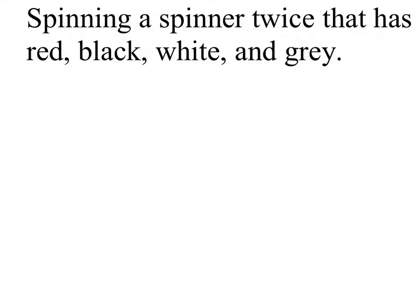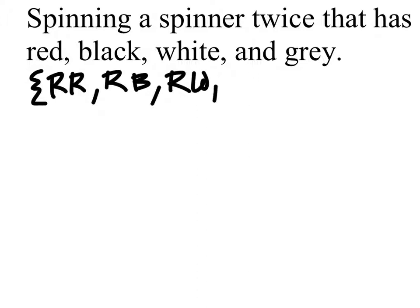So if I spin, let's look at our outcomes. I'm going to do this in rows. I can get red on the first spin and then red on the second. I can get red on the first and then black on the second one. I can get red on the first and white on the second, or I can get red on the first and gray on the second.